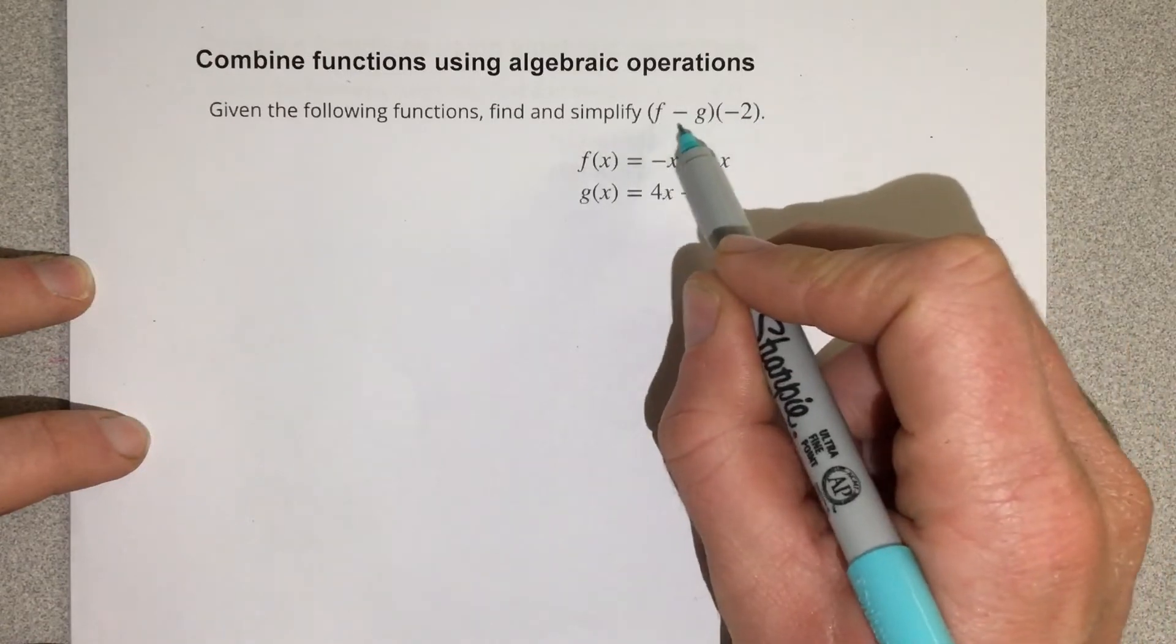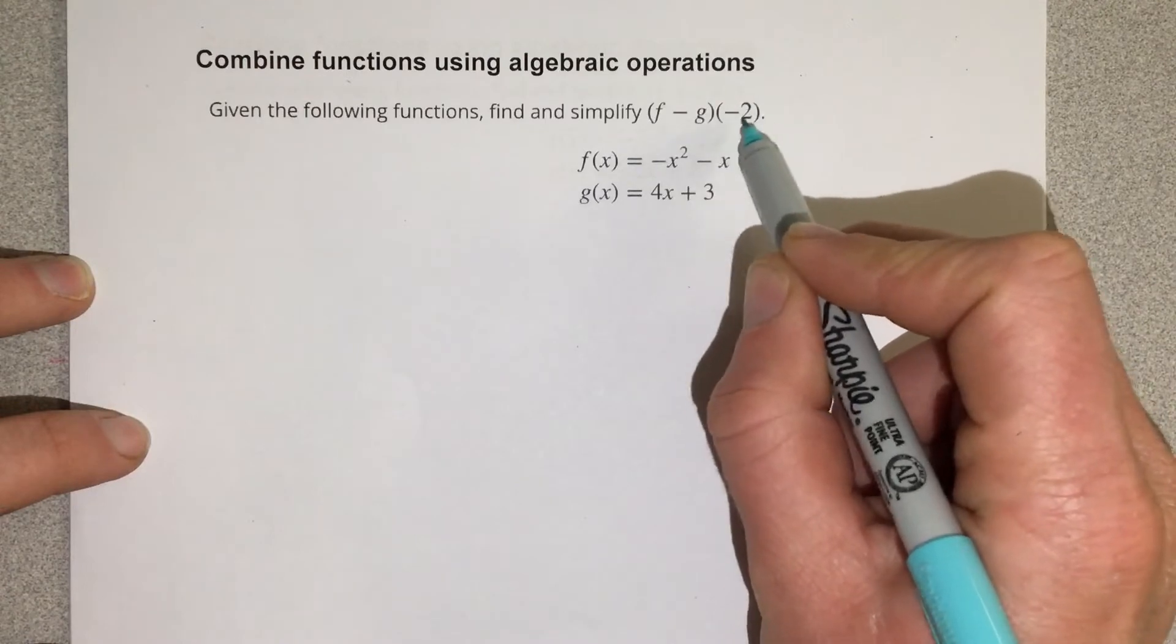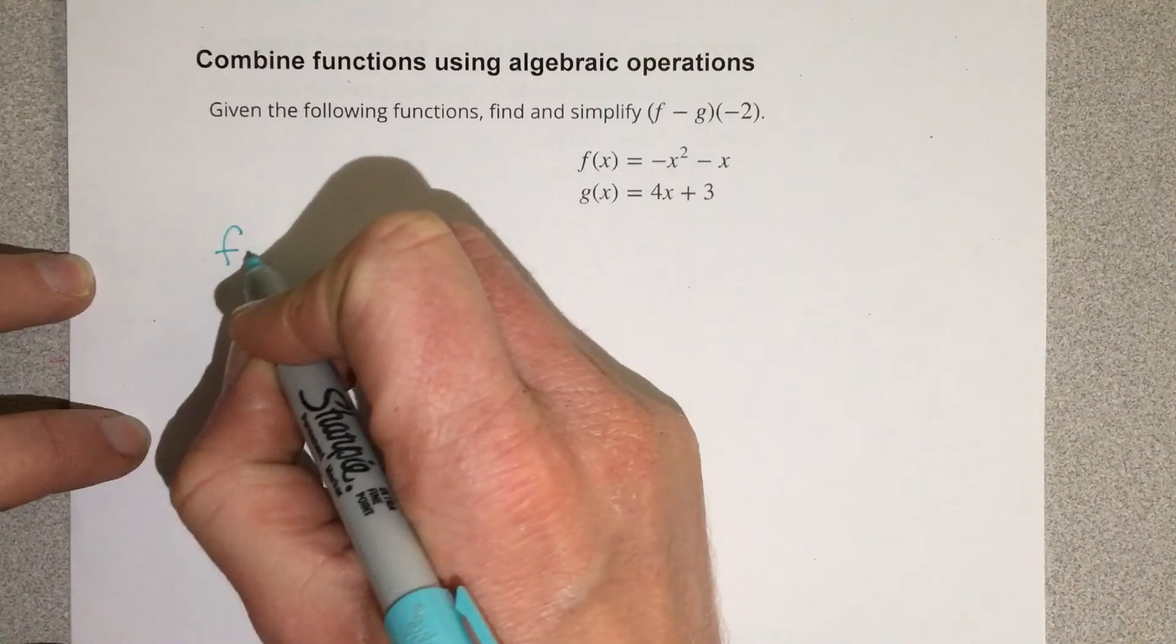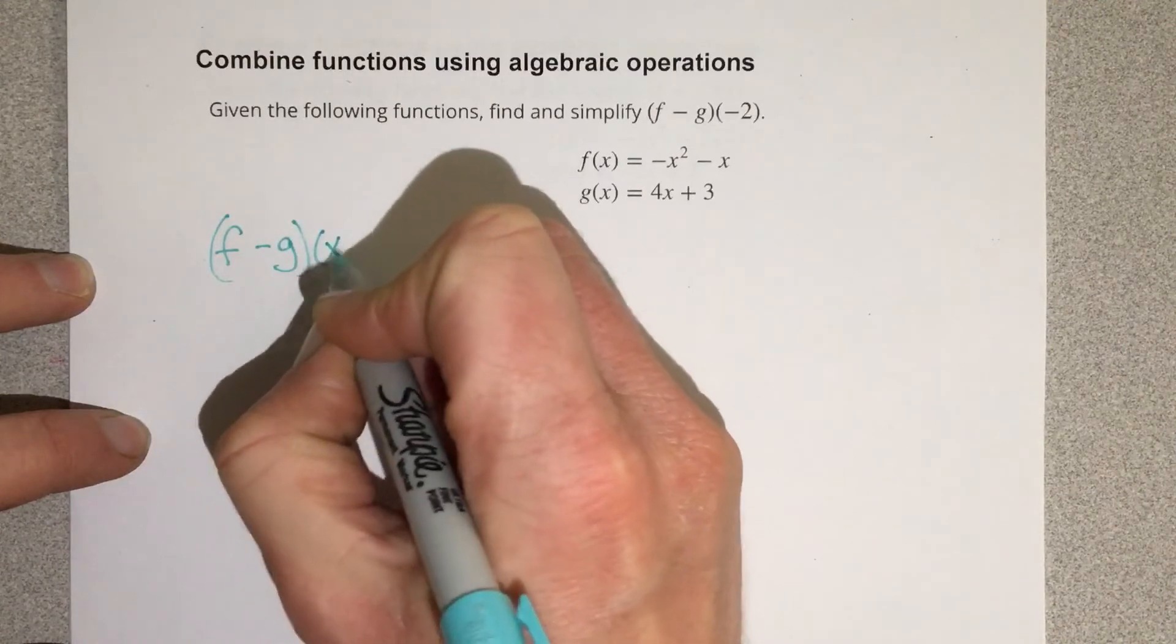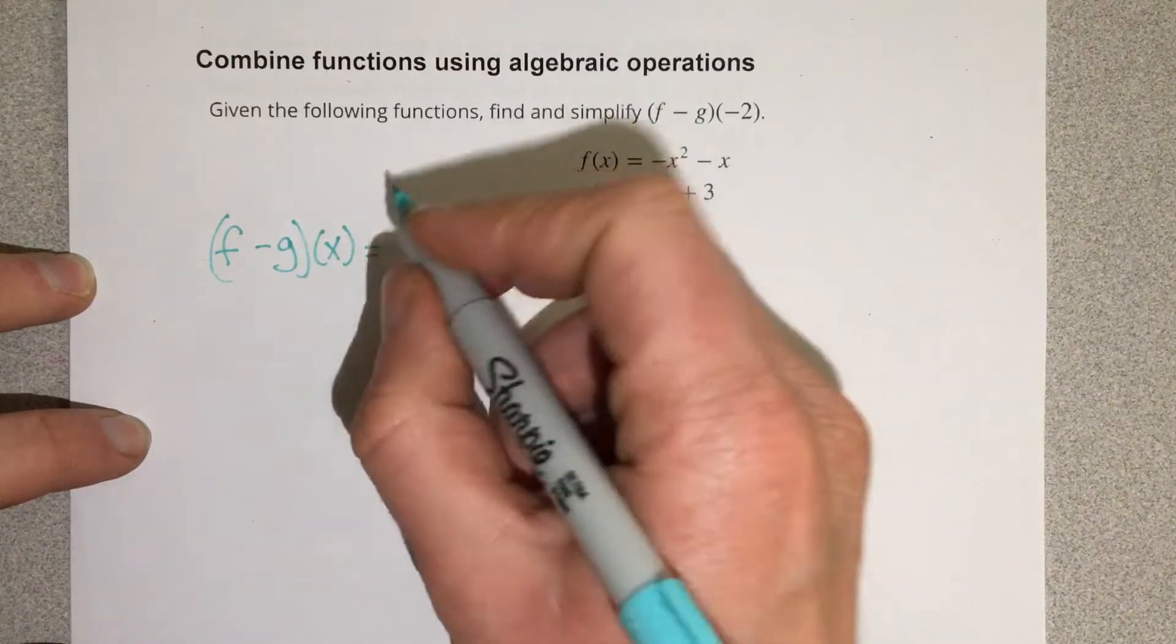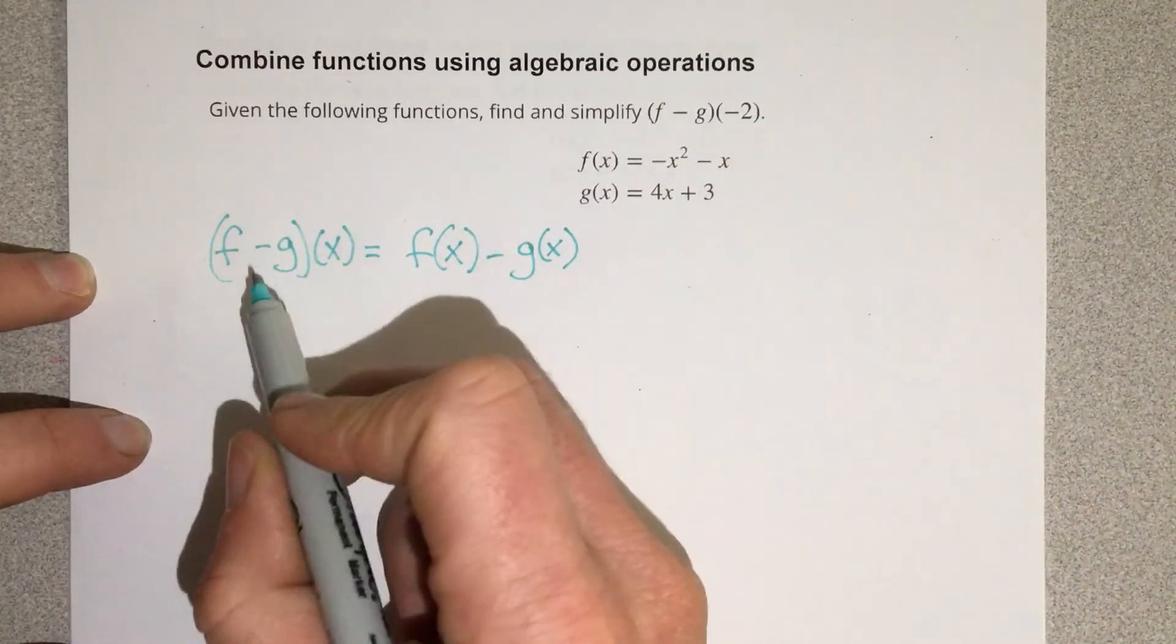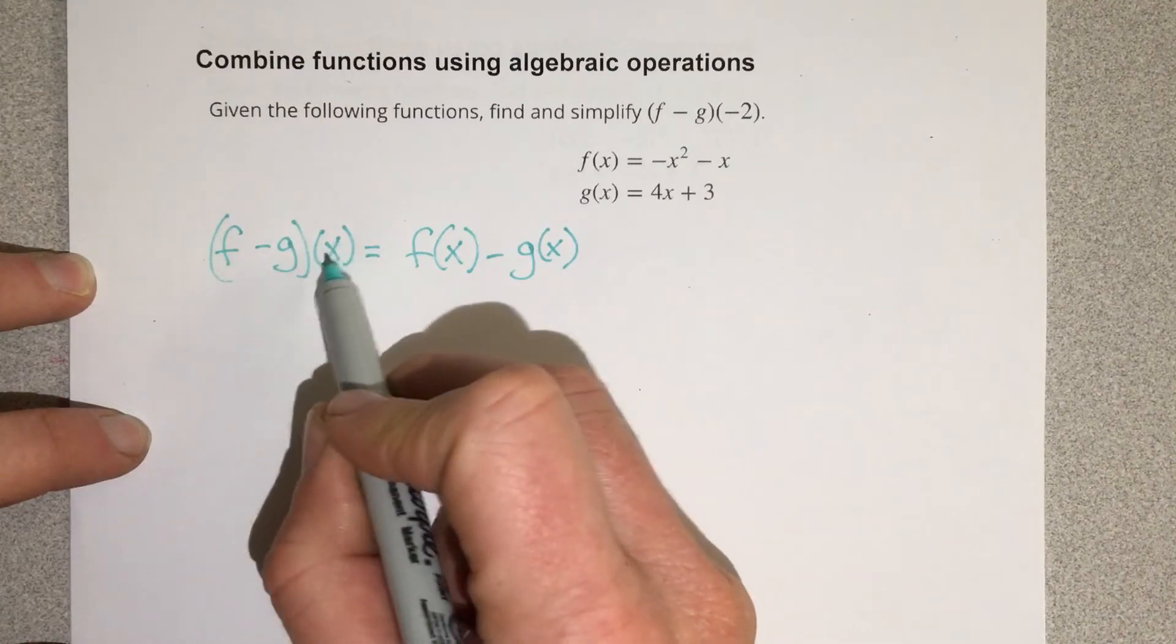So what we're doing here is we're subtracting the f function and the g function, and then we're inputting negative 2. How I would do this problem is I would do the general version of this. So I would say f minus g of x is equal to, and I like to rewrite this as f of x minus g of x.